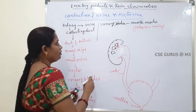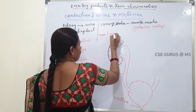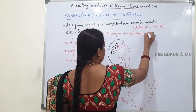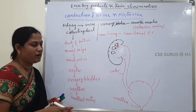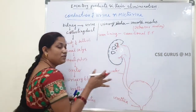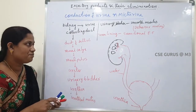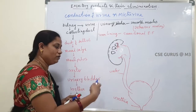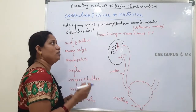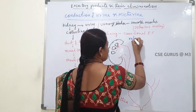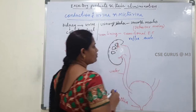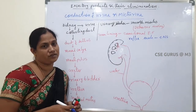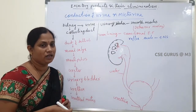The urinary bladder is a bag-like structure that helps in the storage of urine. Micturition means the releasing of urine to the outside, and this process is a reflex arc controlled by the central nervous system (CNS).